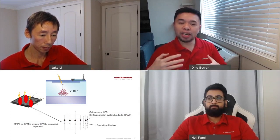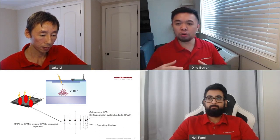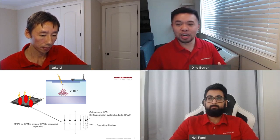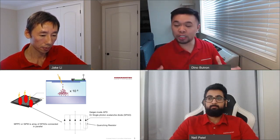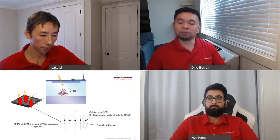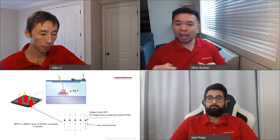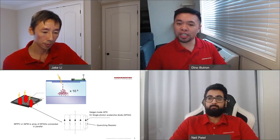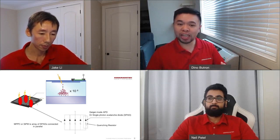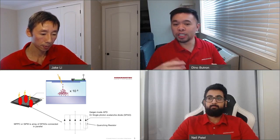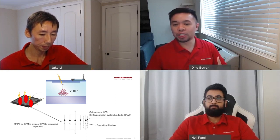When you operate APDs above the breakdown voltage, they can go into what's known as the Geiger region, where a single photon basically saturates the detector, generating upwards of 1 million electrons or more for each photon detected. This was very problematic for the earliest APD users because it latches the output to the saturation current like a switch. But by adding a reset circuit, the Geiger effect can be exploited to detect single photons with very high gain and then reset the detector to detect the next photon. This is essentially how SPADs work.